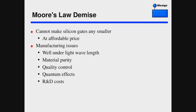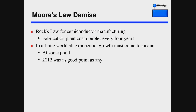The demise of Moore's Law is because of the commercial viability of silicon chips. Companies like Intel simply cannot make the silicon gate any smaller at an affordable price. There are significant manufacturing issues — they use light to chisel the gates, and it's below the wavelength of light. There are material purity issues, quality control problems, and quantum effects between gates. The R&D cost is immense. Something called Rock's Law states that the fabrication cost of the chip doubles every four years. At some point it becomes non-economically viable to make any faster computer.